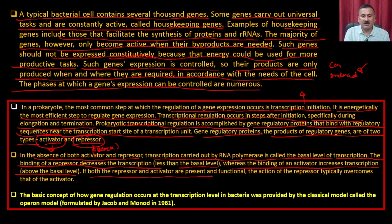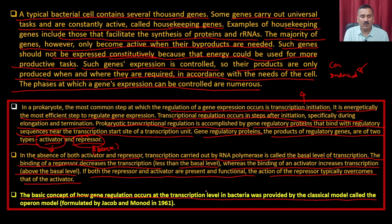If both repressor and activator are present and functional, the action of the repressor typically overtakes the transcription. The basic concept of how gene regulation occurs transcriptionally in bacteria is provided by the classical model called the operon model, formulated by Jacob and Monod in 1961. These models describe how repressors and activators regulate gene expression profiling and transcriptional activities within bacteria.